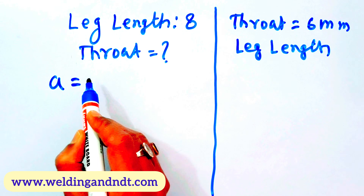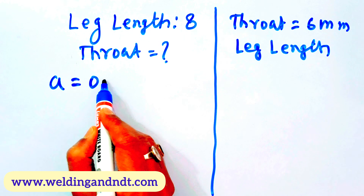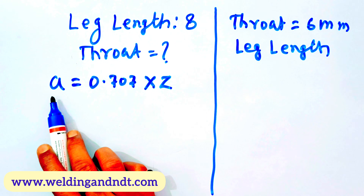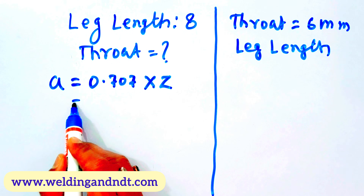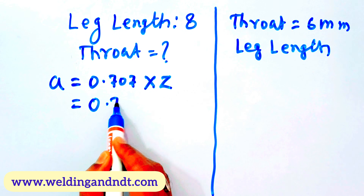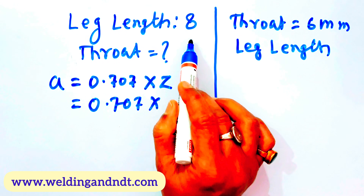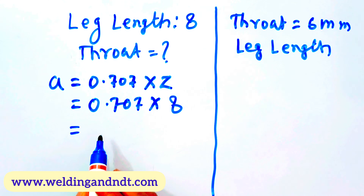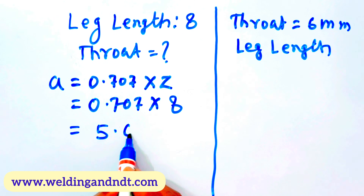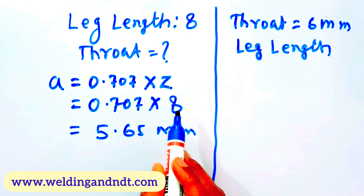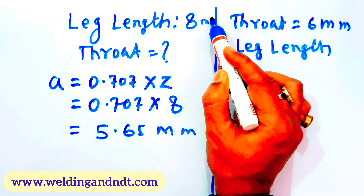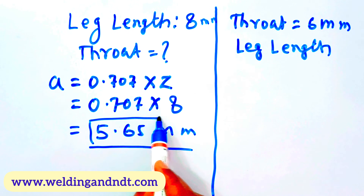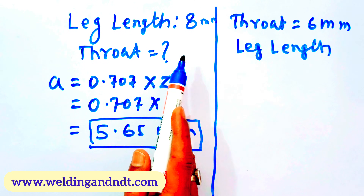A is equal to 0.707 multiplied by Z. A is the throat and Z is the leg length. Putting the values: 0.707 × 8 mm = 5.65 mm. So if the leg length is 8 mm, the throat will be 5.65 mm.